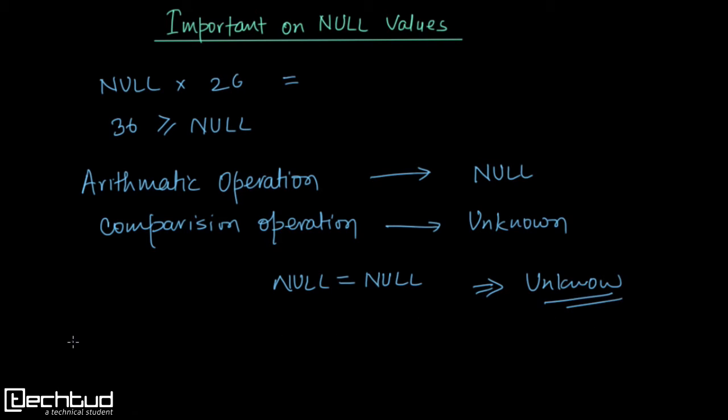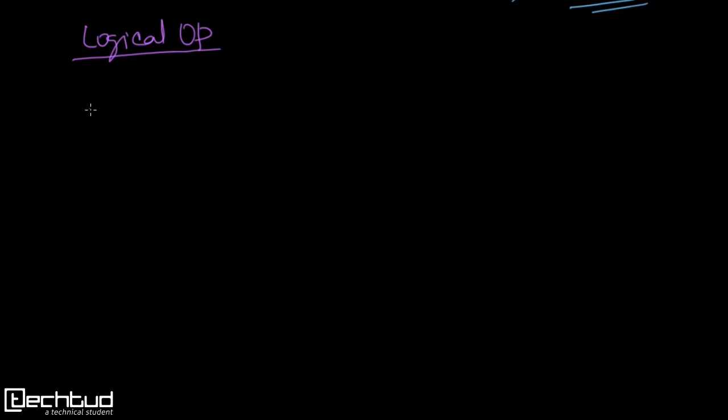Now let's understand some logical operations involving null. We have AND or OR to understand. To understand this in a better manner, see this: we have false as 0, we have true as 1. Unknown is in between them and we will take it as 0.5.